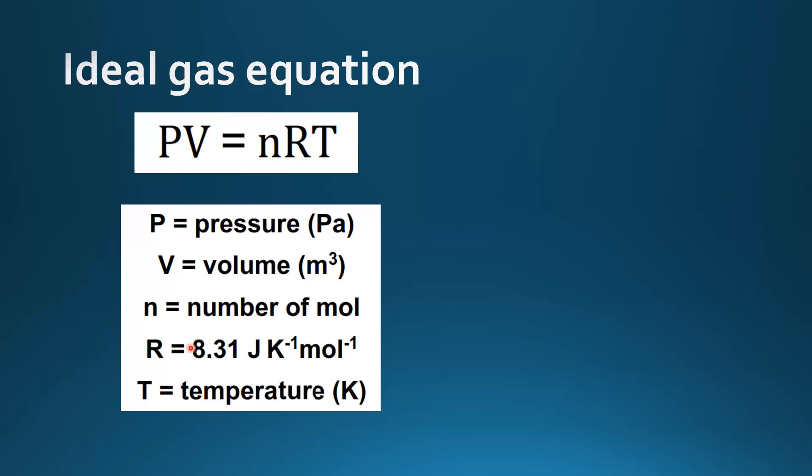N is number of moles. R is the universal gas constant which is 8.31 joules per kelvin mole, and T is temperature in kelvin.